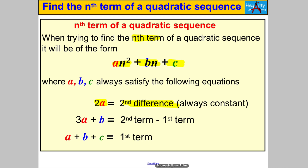It is also always true that 3a + b is always equal to the second term of the sequence subtract the first term of the sequence. And lastly, it is always true that a + b + c gives you the first term of the sequence. We are going to use that in order to find the nth term of a quadratic sequence.